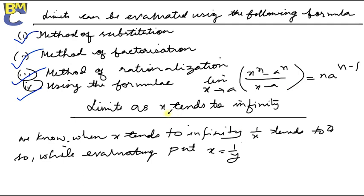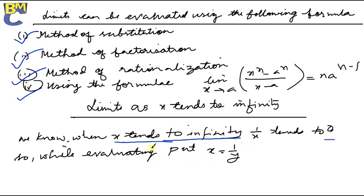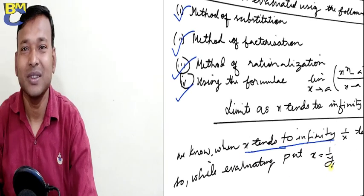Limit as x tends to infinity — what does that mean? We know that when x tends to infinity, 1 by x tends to 0. Remember: in this case, we will put x equal to 1 over the appropriate substitution.